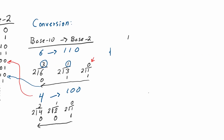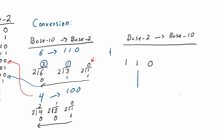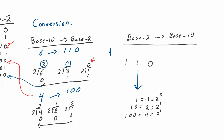Now let's look at conversion from base two to base ten. Let's take the value four in binary. Notice that 1 in binary equals 1, which is 2 to the power of zero. Then 1-0 equals two, which is 2 to the first power. Then 1-0-0 equals four, which is 2 to the second power. And 1-0-0-0 equals eight, which is 2 to the third power.